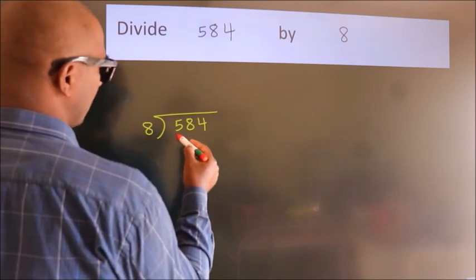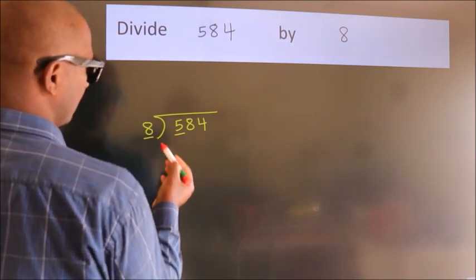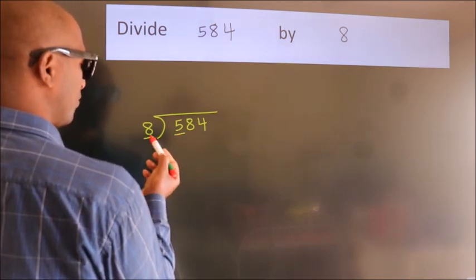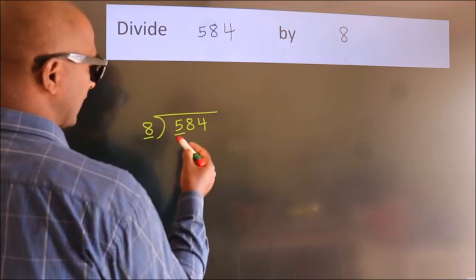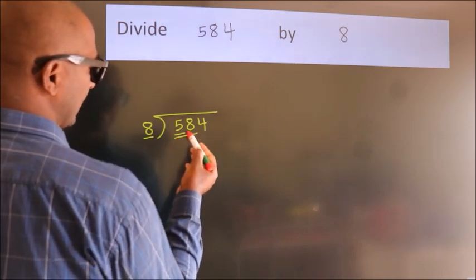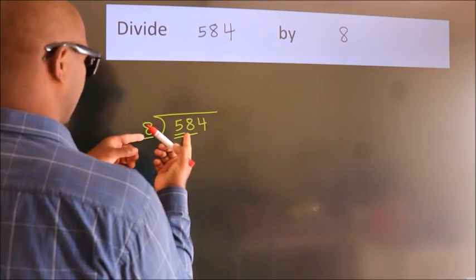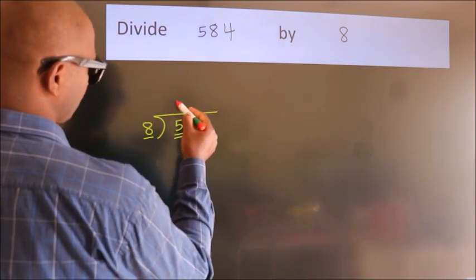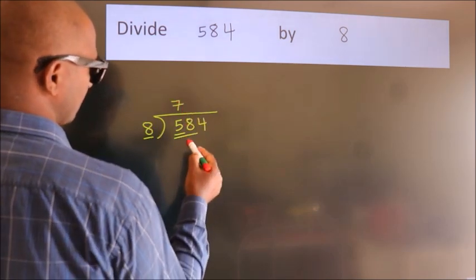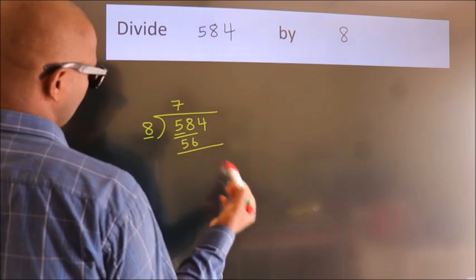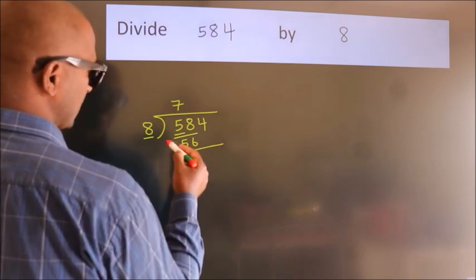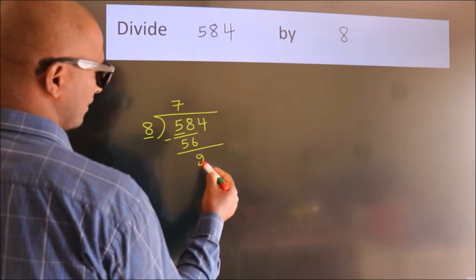Here we have 5, here 8. 5 is smaller than 8, so we should take two numbers: 58. A number close to 58 in the 8 table is 8 times 7, which is 56. Now we should subtract. We get 2.